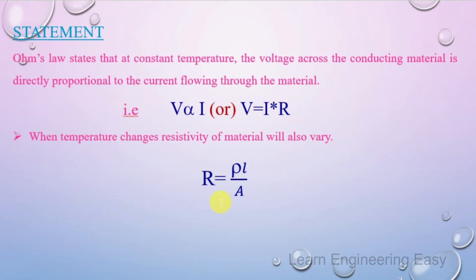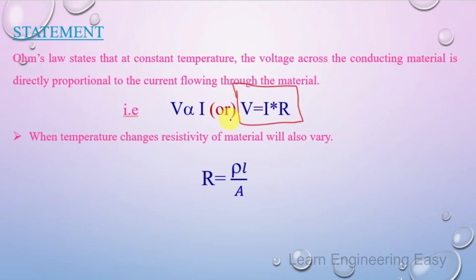R is equal to ρL/A, where ρ is the resistivity of the material. Since resistivity is temperature dependent, when temperature changes, the resistivity of the material changes, which changes R. Therefore, Ohm's Law — V = IR — can only be applied when temperature is constant.